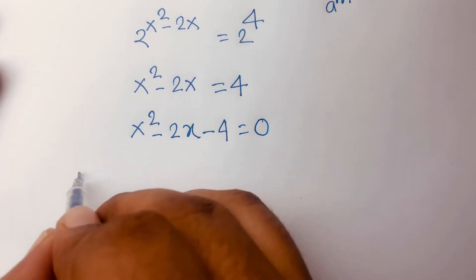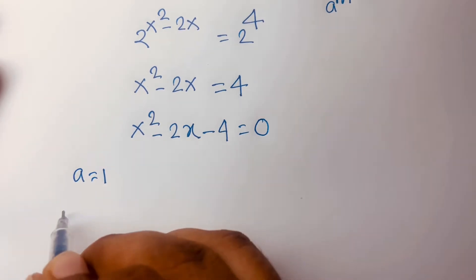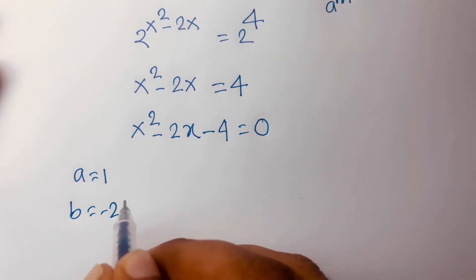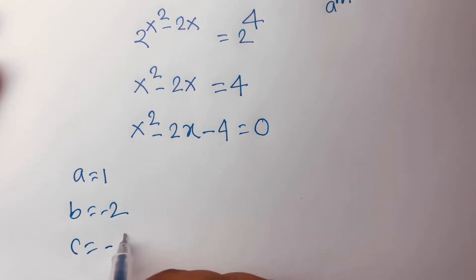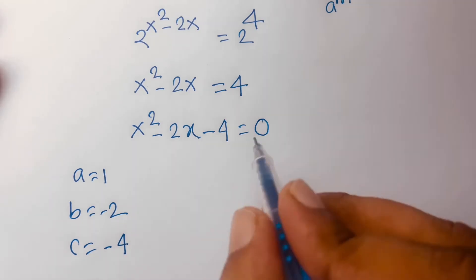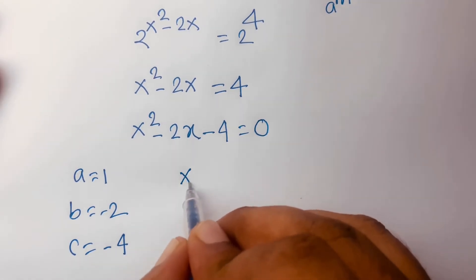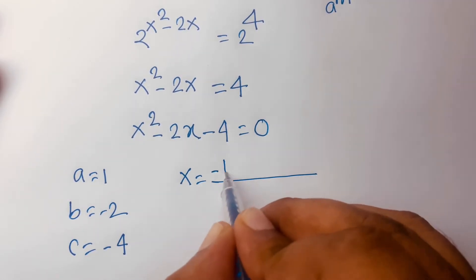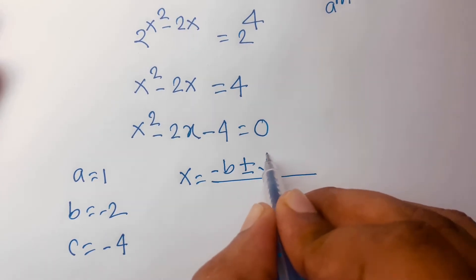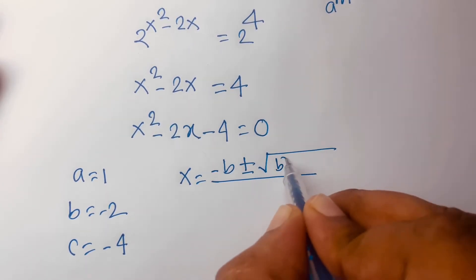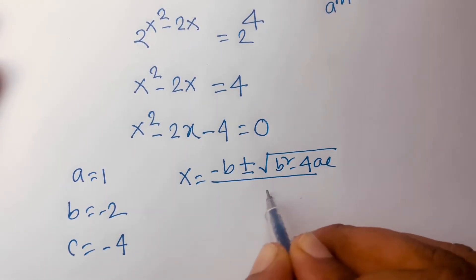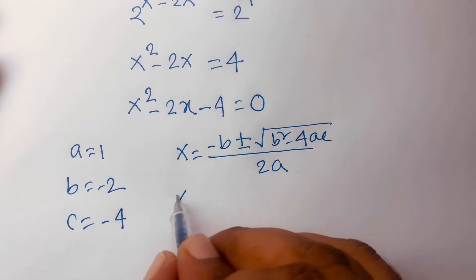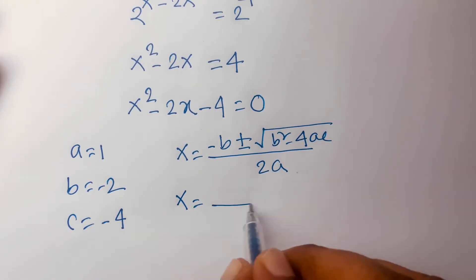Here a is equal to 1, b is equal to minus 2, and c is equal to minus 4. So it is a quadratic equation, and here x is equal to minus b plus or minus square root of b squared minus 4ac over 2a.